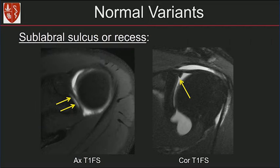Here's an example: axial image on the left, coronal image on the right, T1 fat-suppressed MR arthrogram images. You can see a nice cleft between the glenoid and the superior labrum on the axial images and also on the coronal images. Notice how the signal parallels the glenoid. This is your sublabral sulcus.